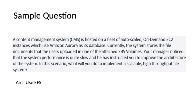Sample question: A content management system is hosted on a fleet of auto-scaled on-demand EC2 instances using Amazon Aurora as its database. Currently, the system stores file documents uploaded by users in one of the attached EBS volumes. You noticed the system performance is quite slow and you have been instructed to improve the architecture. What will you do to implement a scalable, high-throughput file system? The answer is to use EFS.